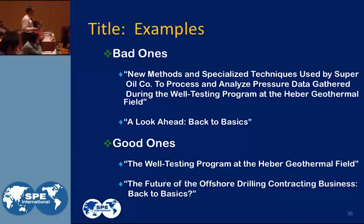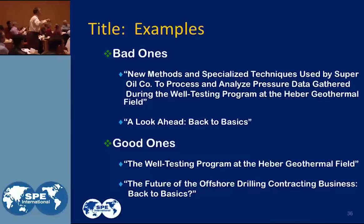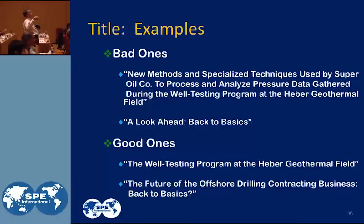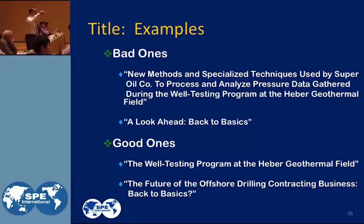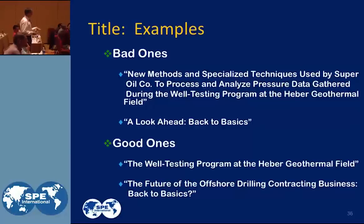Here's some title examples — the good, the bad, the ugly. The bad ones: 'New methods and specialized techniques used by Super Oil Company to process and analyze pressure data gathered during the well testing program at the Heber geothermal field.' That is a mouthful — that's a bad one. And 'A look ahead — back to basics.' Now what is in this paper? As a reader, you're probably going to pass this paper up even though it might have useful information. As an author, you have to remember that when people are scanning the literature looking for your paper.